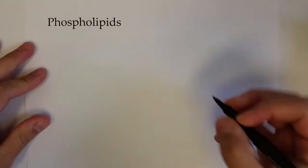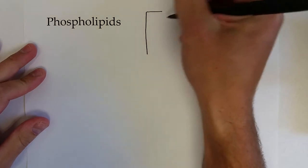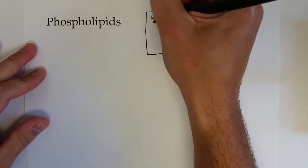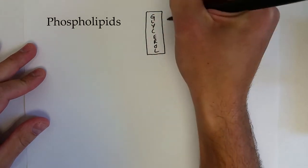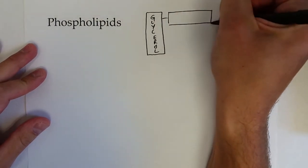Okay, so the next class of lipids that we're going to talk about are phospholipids. Phospholipids have a very similar structure to triacylglycerols in that they start off with a glycerol molecule that is bonded to two fatty acids.